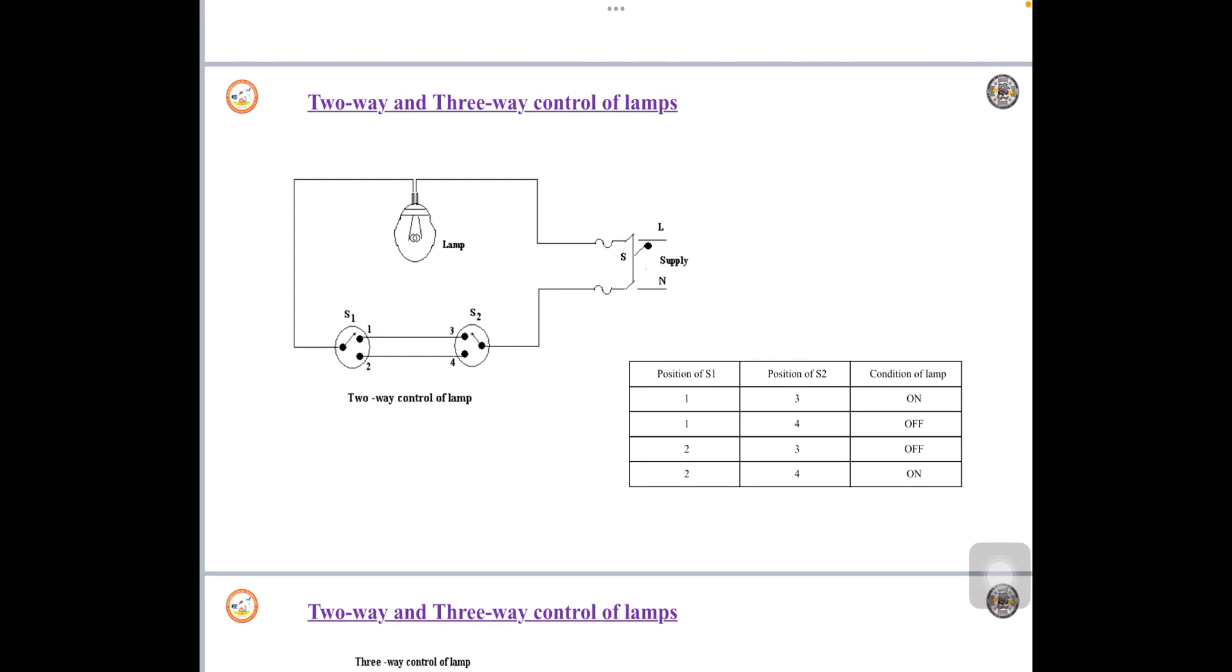Today's topic is 2-way and 3-way control of lamps. Generally we know that the domestic lighting circuits are very simple and they are generally controlled by one point or one switch, but in certain cases it might be necessary to control a single lamp from more than one point.